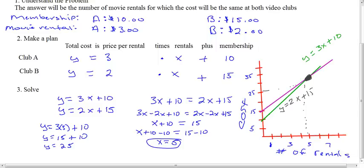They're equal, and this is what this is telling us. So just be real clear. The number of movie rentals is 5. So at 5 movie rentals, the cost is equal to $25. So no matter whether you go to A or B, you will rent 5 movies, and you will have to pay $25.